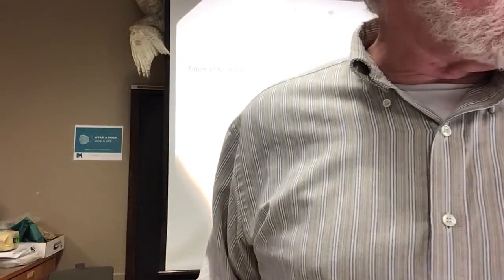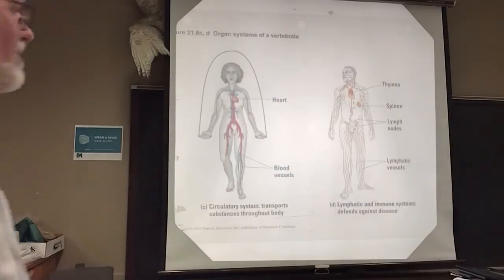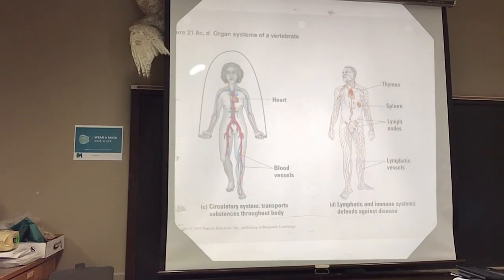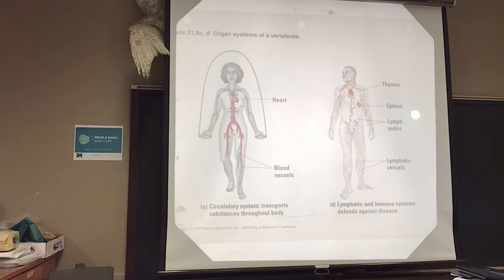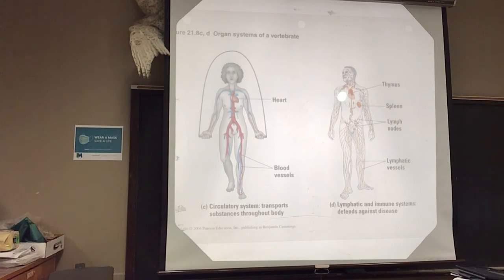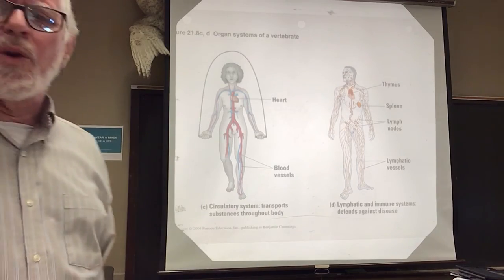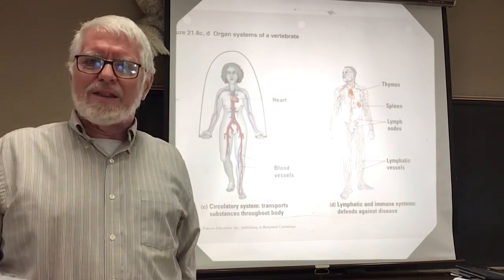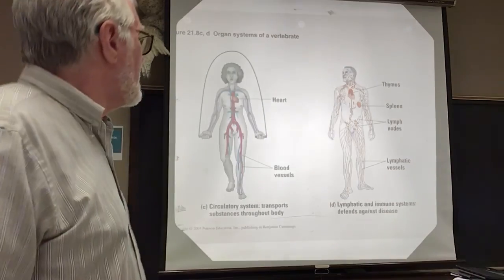We're going to move into the circulation system. We just also talked about the lymph system, where you have all these drainage tubes from all over your body and little collection points. These dots are lymph nodes. Your spleen is considered part of your lymph system because it has blood storage functions. Your thymus is part of your lymph system because that's where your T cells mature. Up in your head, they're discovering more drainage in and around the brain than they used to think.